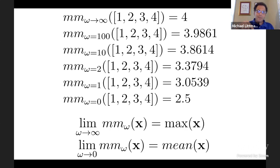As that value omega goes to zero, then we get the average of one, two, three, four, which is two and a half. And for values in between values of omega in between, we get this kind of soft interpolation between the mean on one side and the max on the other side. And in fact, that really holds in general, not just for one, two, three, four.